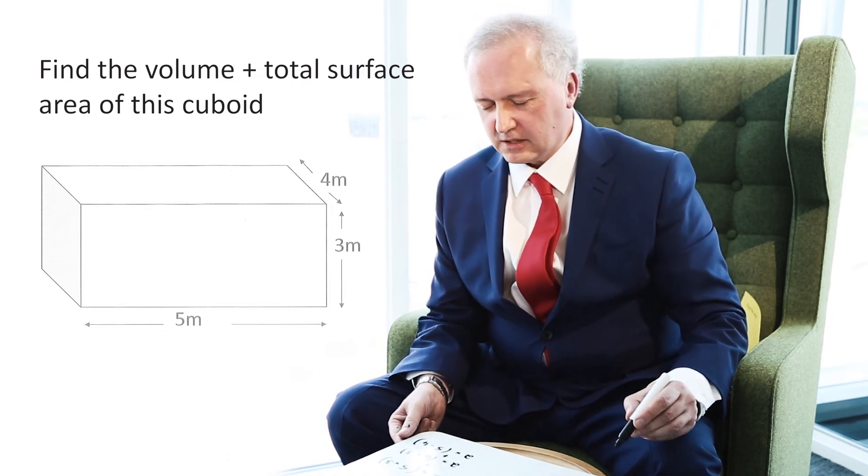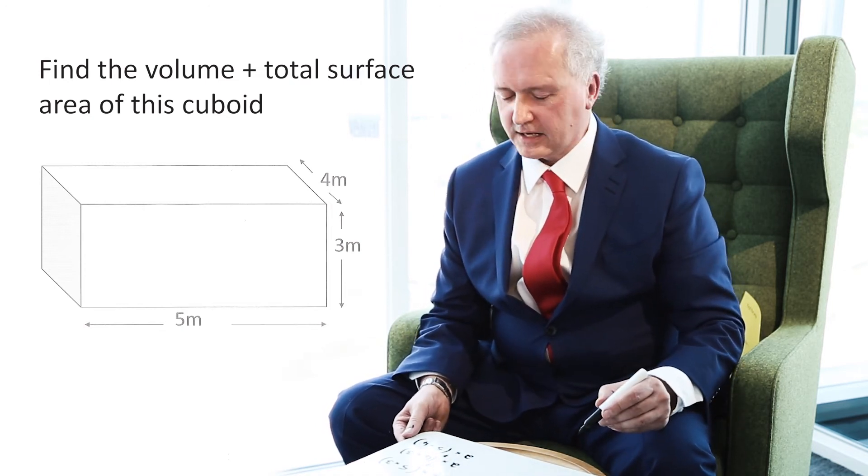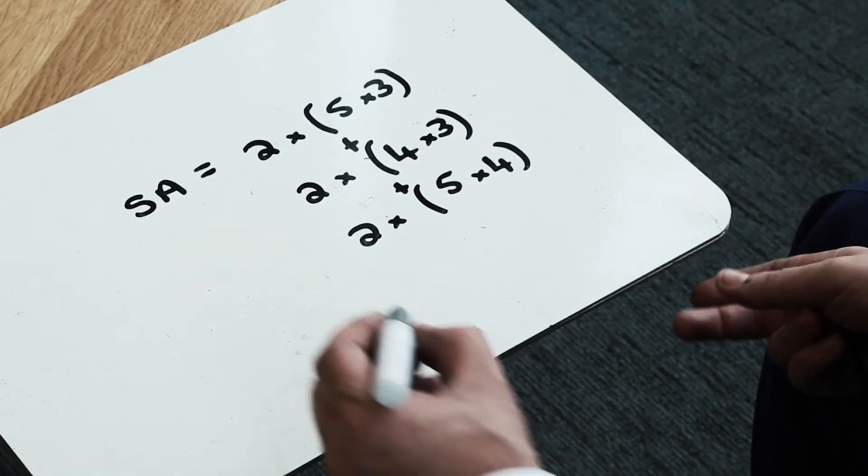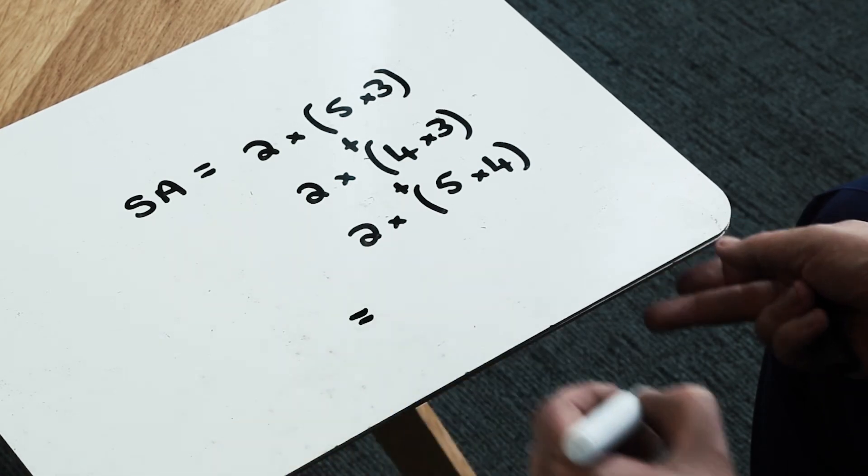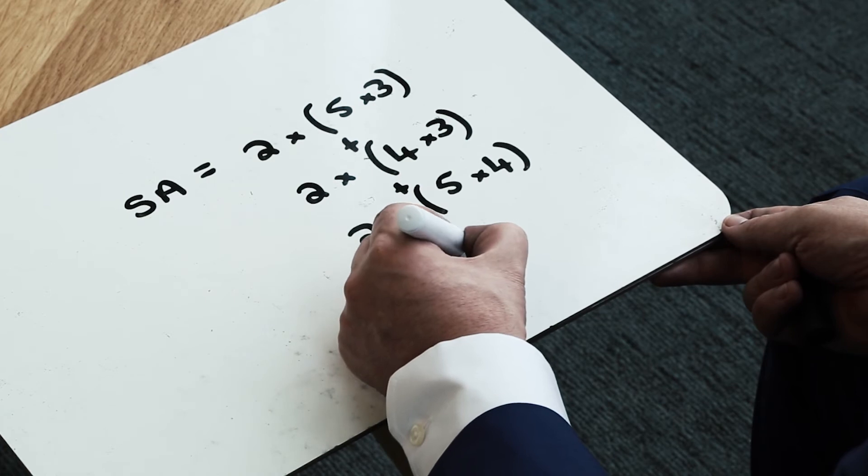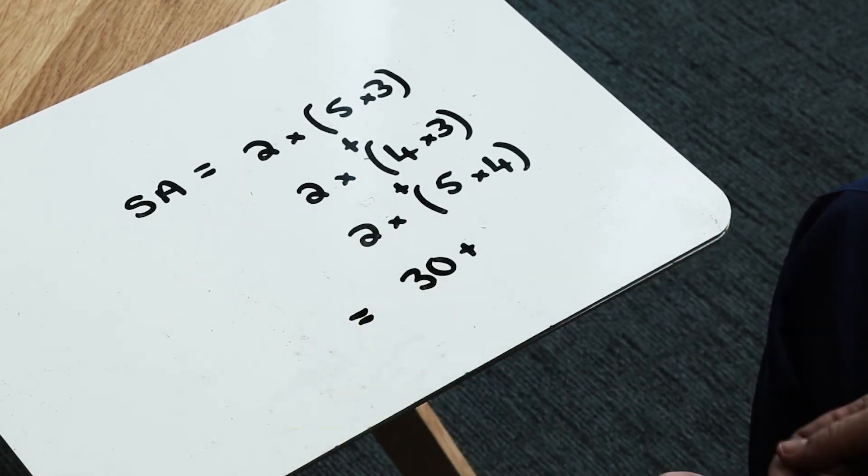So what I now need to do is I just need to finish off this calculation to work out the total surface area of this cuboid. Now I've worked systematically. I just say to myself, okay, 2 times 5 times 3, that's 2 times 15. That's 30 meters squared.